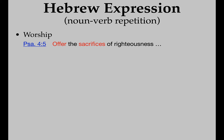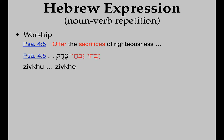Another good example is in Psalm 4:5: 'Offer the sacrifices of righteousness.' In English, offer and sacrifice have only a vague connection. But in Hebrew it's very clear: zivchu zivche tzedek. Zain-kaf-chet means to offer, so he uses the verb first — zivchu — then he says zivche tzedek, the sacrifices of righteousness. If you wanted to capture the wordplay better you'd say 'sacrifice the sacrifices of righteousness' or 'offer the offerings of sacrifice,' but that doesn't sound good in English style. That's how it sounds in Hebrew.